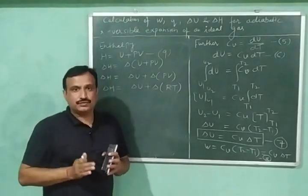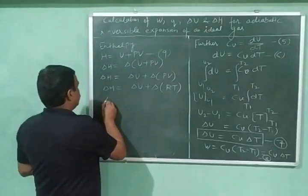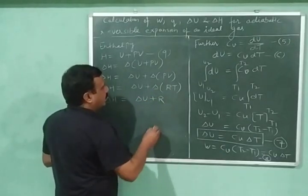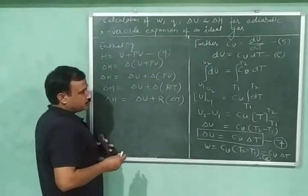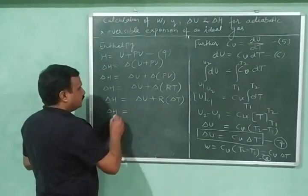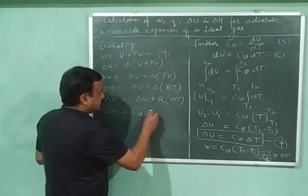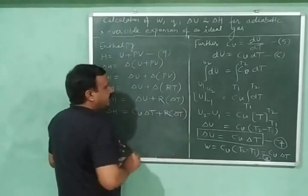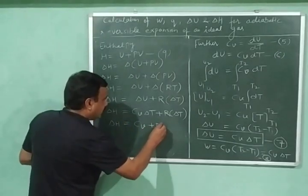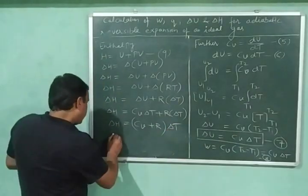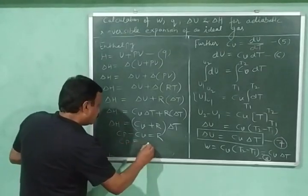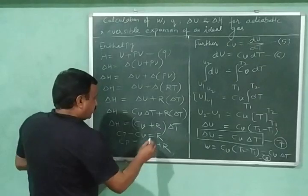Delta H equals delta U plus delta RT, because PV equals RT for one mole of an ideal gas. Therefore, delta H equals delta U plus R times delta T, where R is the gas constant. Substituting the value of delta U from equation number seven, delta H equals Cv delta T plus R delta T, which gives delta H equals (Cv plus R) times delta T. We know that Cp equals Cv plus R — let this be equation number ten.